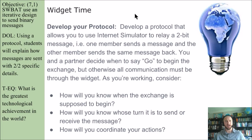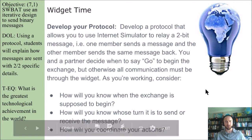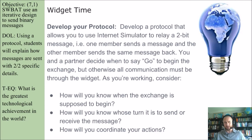Widget time. The point of signing up on code.org was so we can access this amazing widget, and there are several widgets throughout the course for us to use. You're going to develop a protocol that allows you to use this Internet Simulator to relay a 2-bit message — one member sends a message, and the other member sends the same message back. You and a partner decide when to say go to begin the exchange, but otherwise all communication must be through the widget.